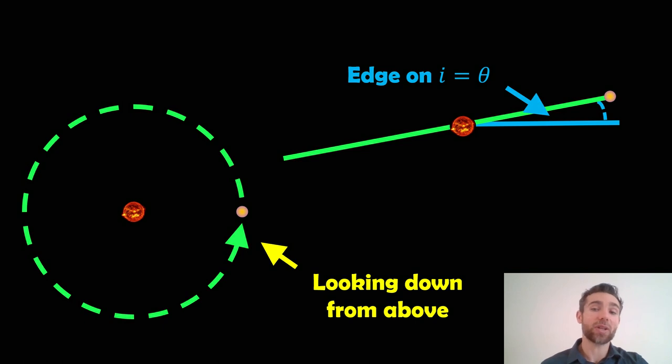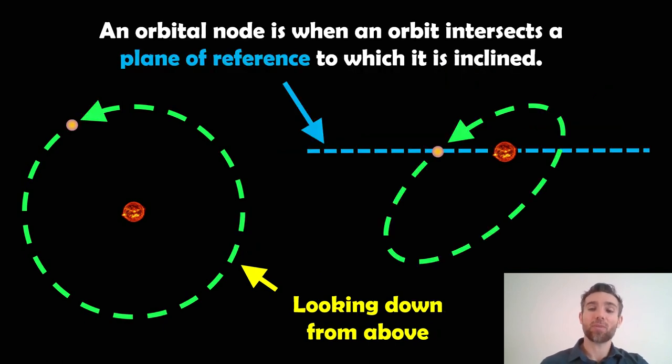What that actually means when you've got an orbit inclination is that the body that's on the orbit, on the green orbit we can see here, will pass through the plane of reference twice, and the locations where it does that are the orbital nodes.